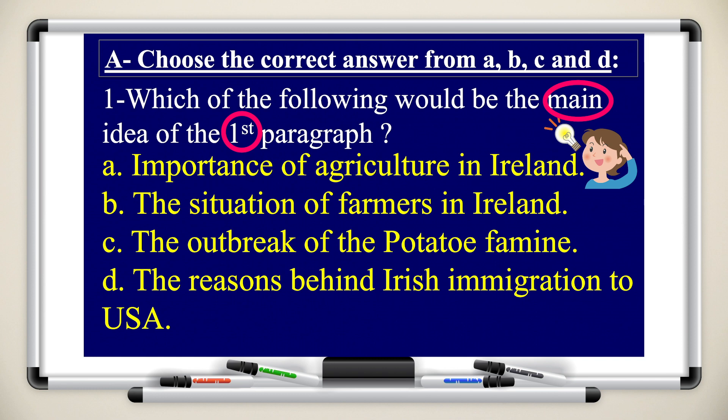After reading the paragraphs, let's take a look at the questions and find the answers. Which of the following would be the main idea of the first paragraph? You may open the textbook and try to figure out which one is the correct answer. Is it the importance of agriculture in Ireland? The situation of farmers in Ireland? The outbreak of the potato famine? Or the reasons behind Irish immigration to the USA? The answer is: the reasons behind Irish immigration to the United States.